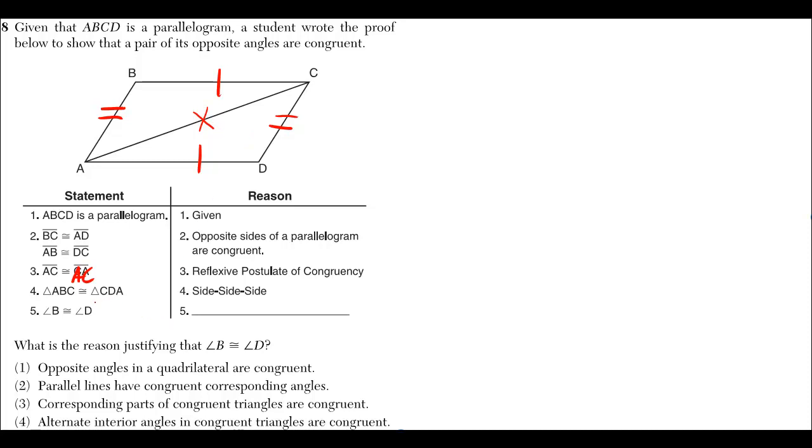And then the student went ahead and said that triangle ABC is congruent to triangle CDA. Well, that's this triangle up here is congruent to this triangle down here. And then he said angle B is congruent to angle D. That's this angle and that angle.